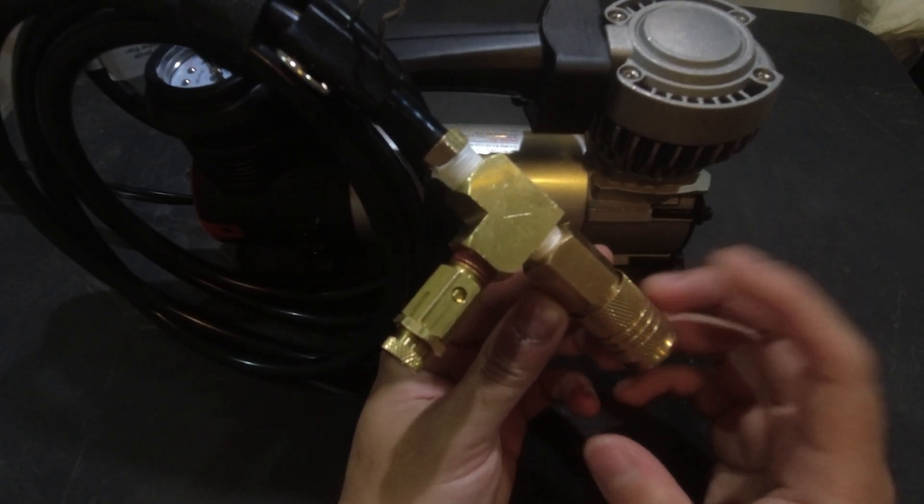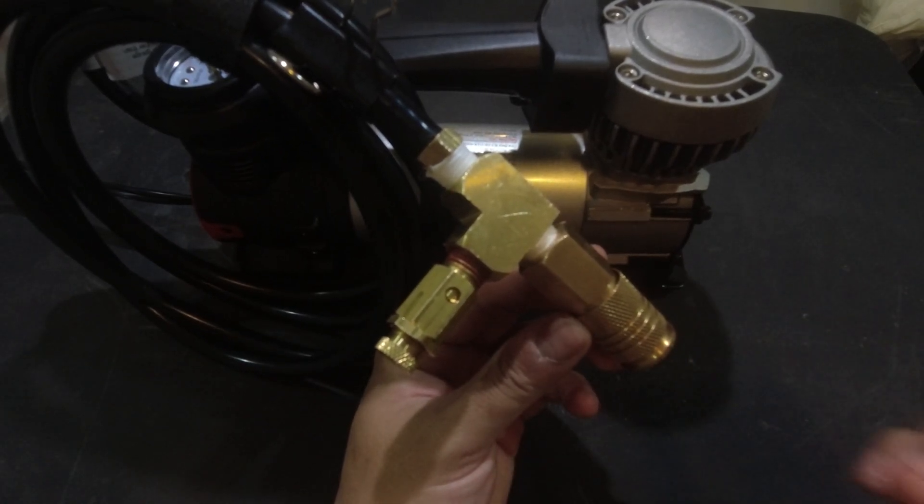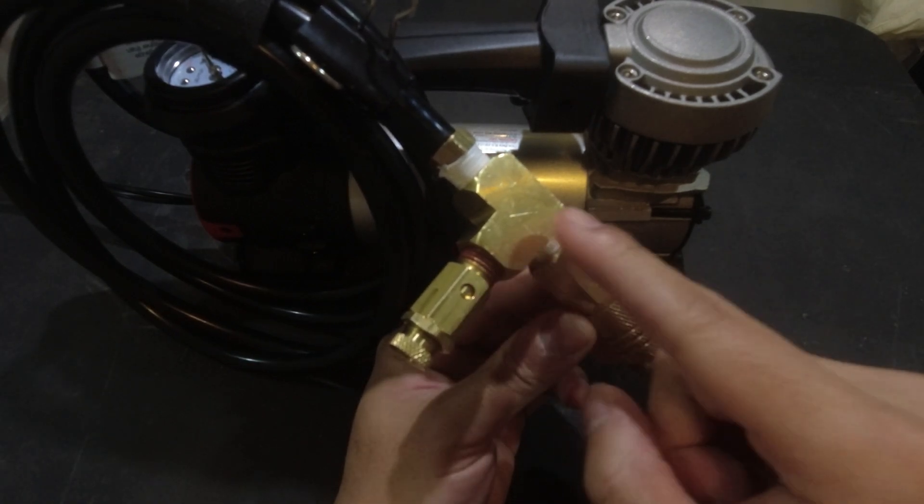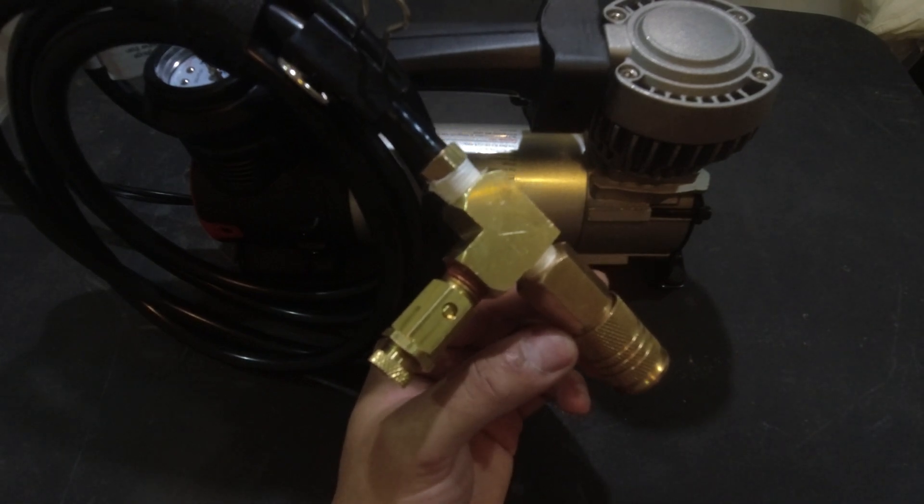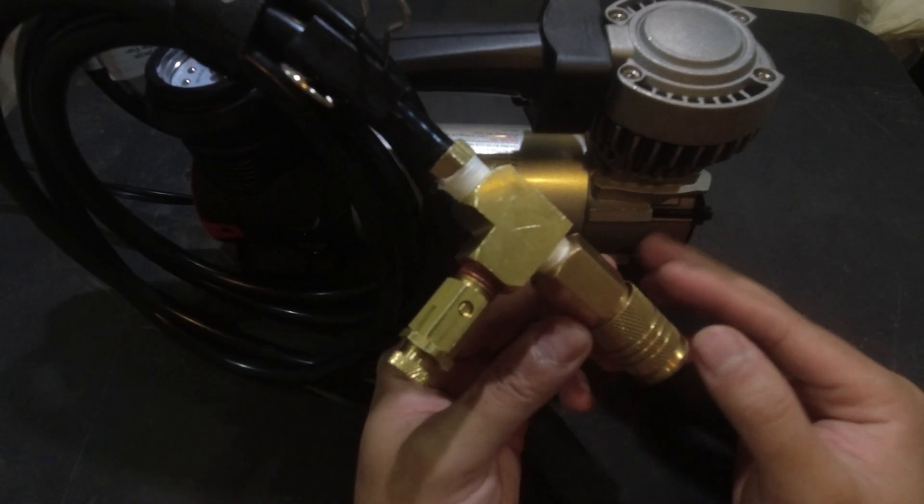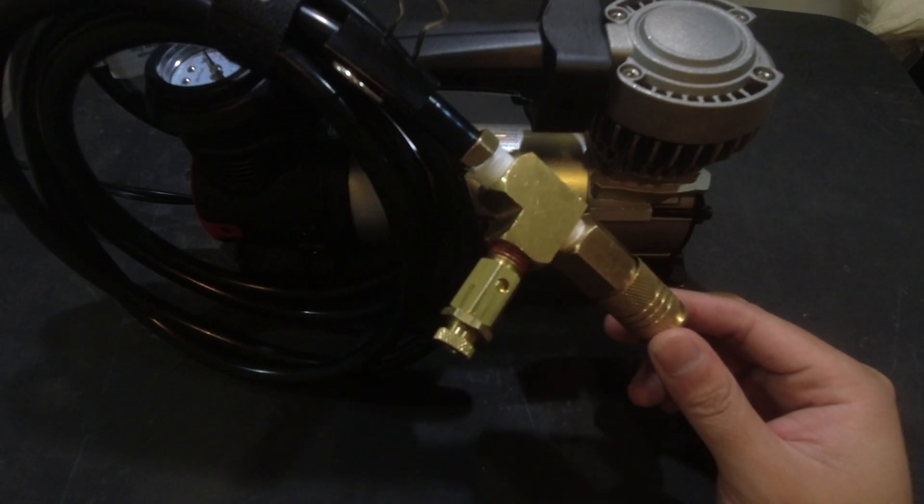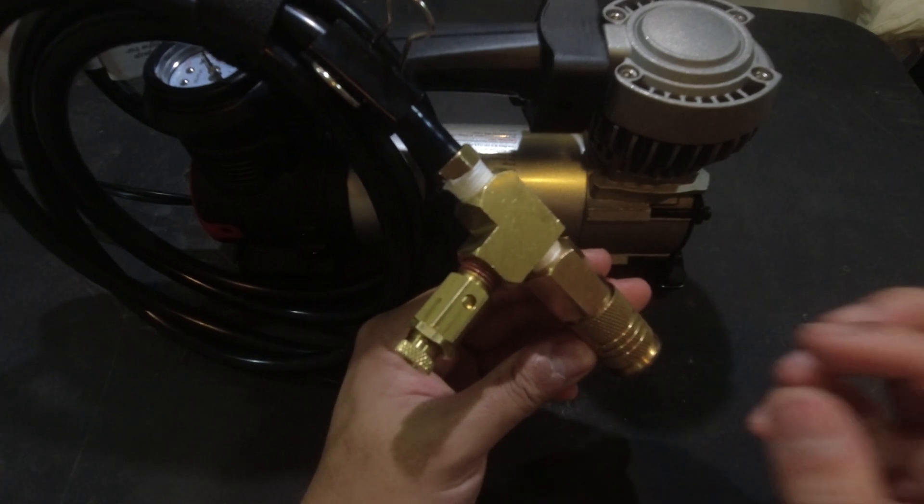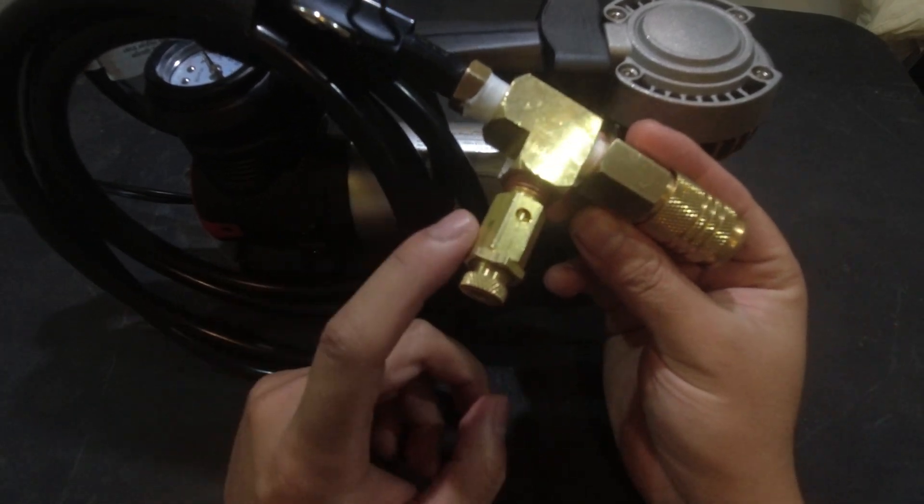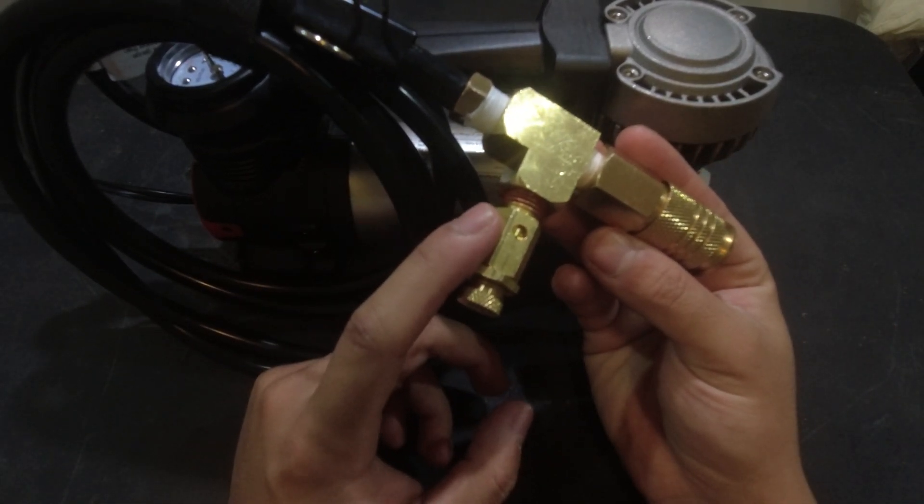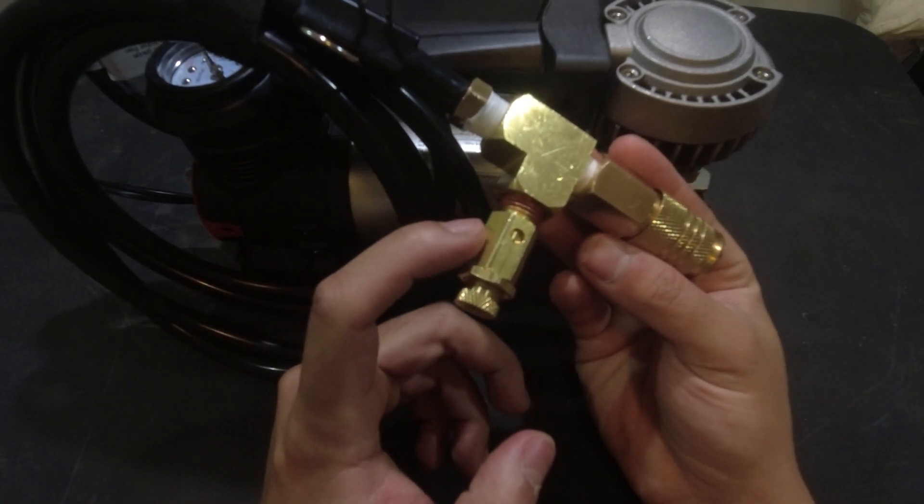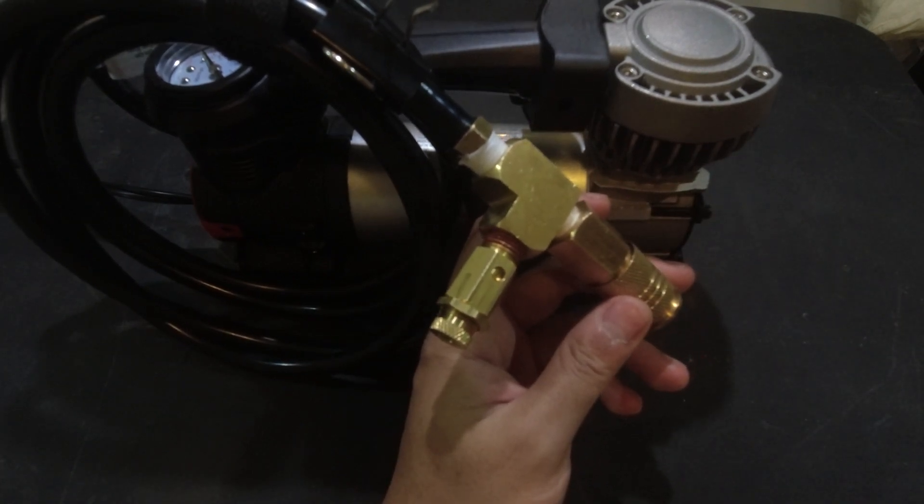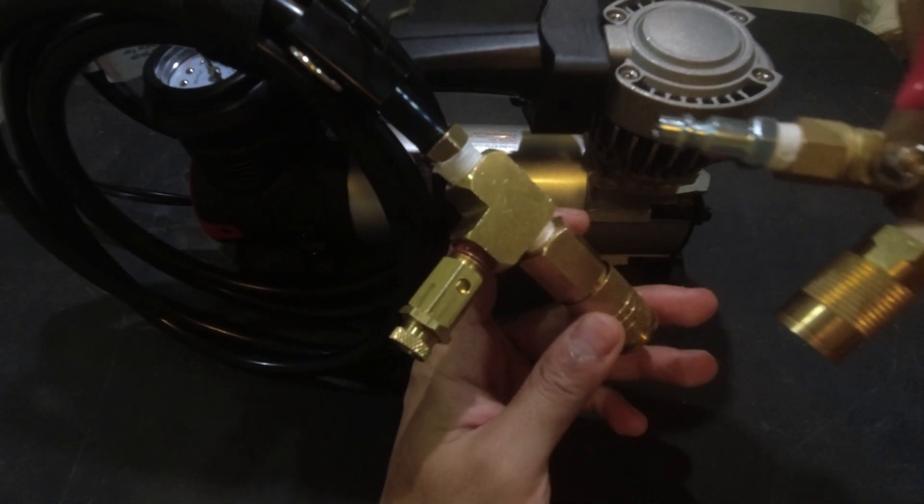The neat thing about this system is since these couplers are closed when not coupled, they won't let any air out. When I first built this without these fittings, I over pressurized my air compressor to 100 psi. To mitigate that and add safety, I put in this valve that will blow off or open once it reaches 70 psi.